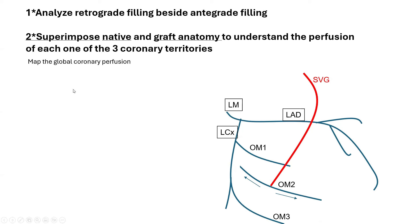Two additional ideas for analyzing graft angiography. First, analyze both antegrade and retrograde filling via the vein graft — a graft fills the bypass artery antegradely but also retrogradely all the way to the point of occlusion or subtotal occlusion. Second, superimpose the native angiography and graft anatomy to understand the perfusion of each of the three major coronary territories — map the global coronary perfusion.